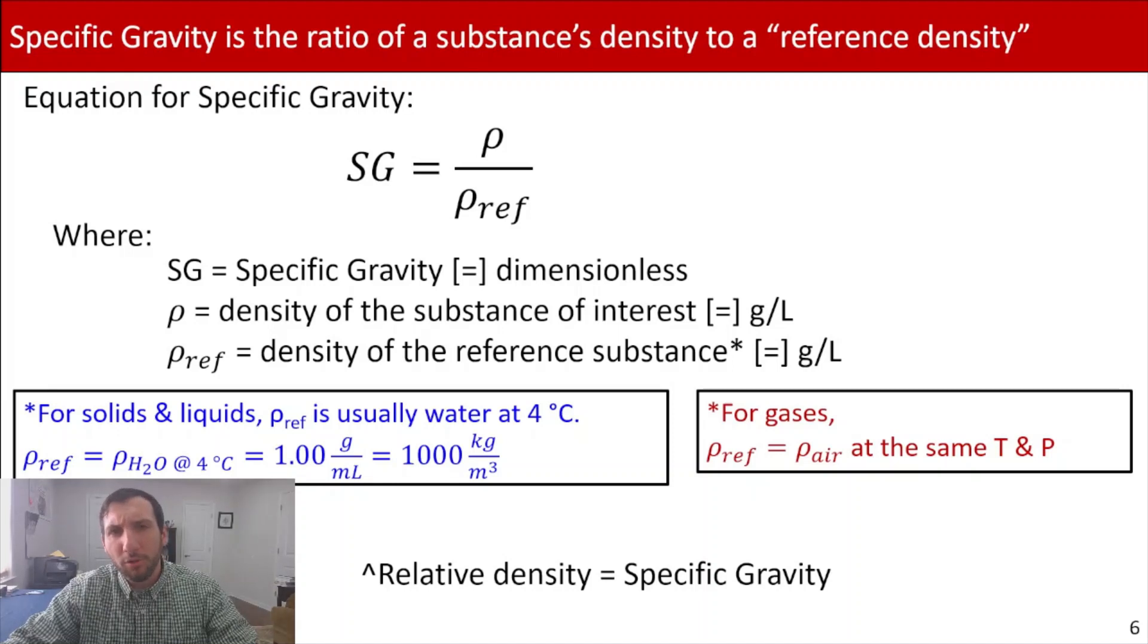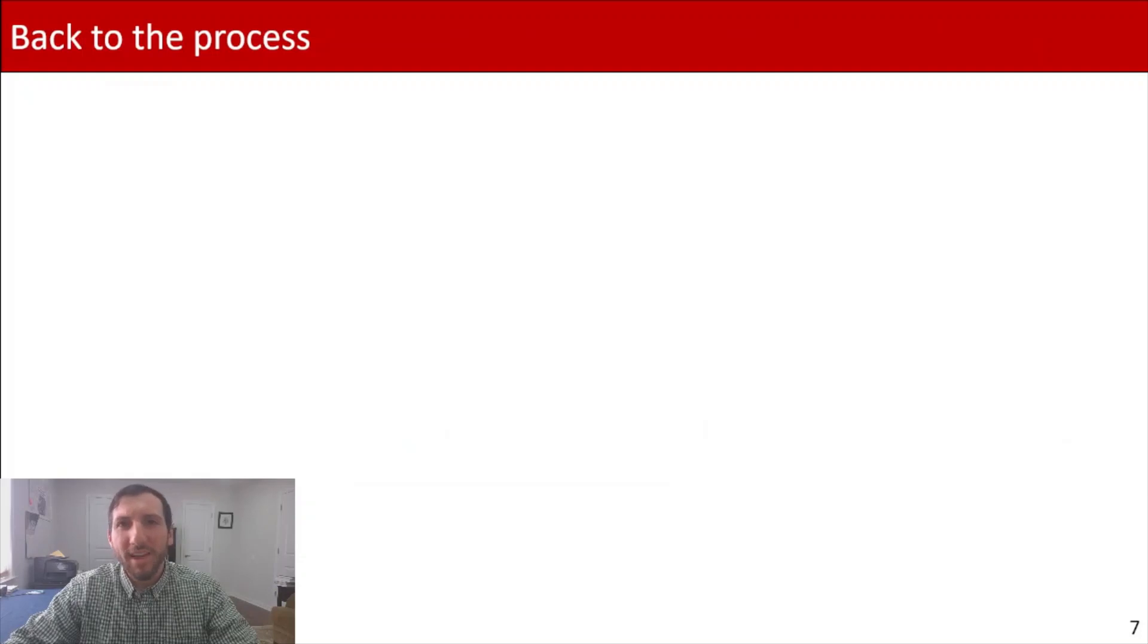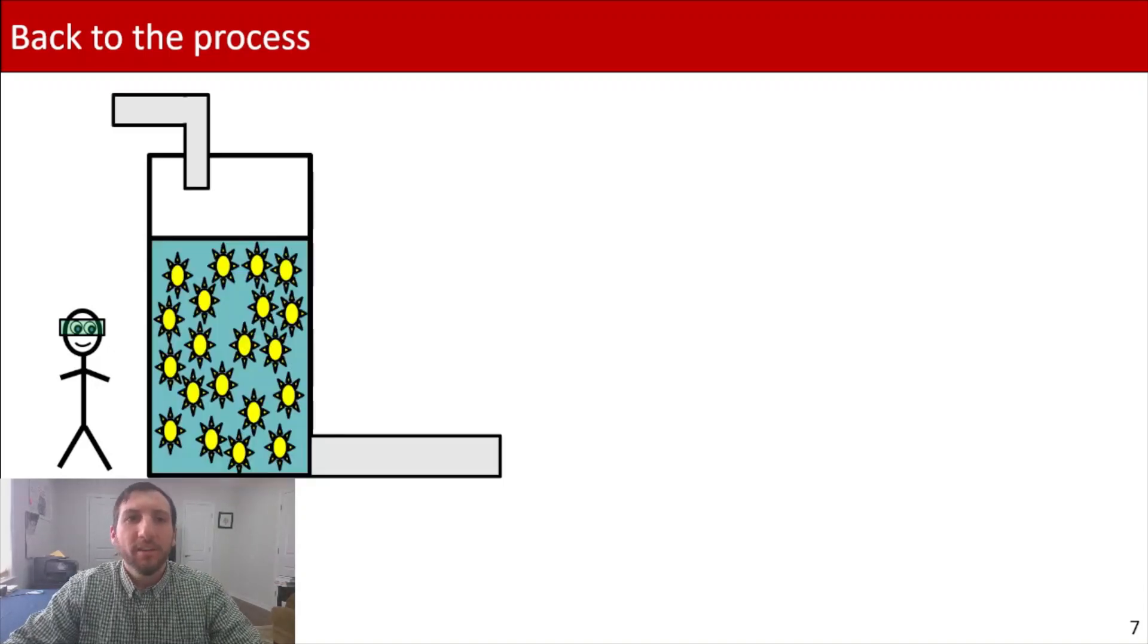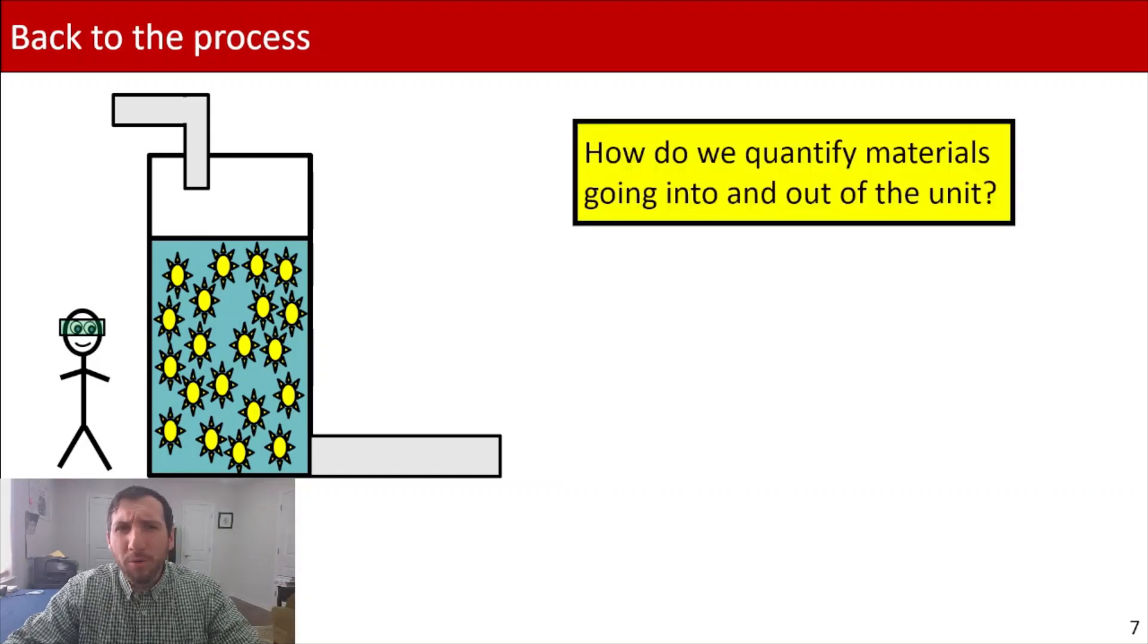Now, I'm going to circle back to a process. It's not going to be the same exact process that we were talking about before, but it's a process. So back to our process. Now, let's pretend we've got the engineer. That's you. And within there, you're overseeing a reactor. And in this case, we're making chemical X, which is those sun-like molecules that you see inside the reactor. And one of the big questions you have when working and overseeing this process is, how do we quantify materials going into and out of the unit? What do we do about that?